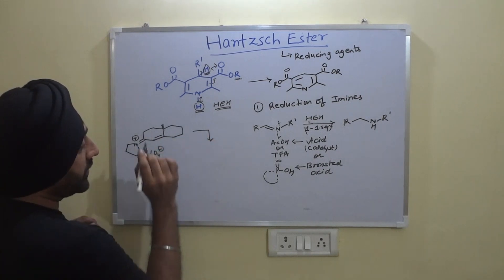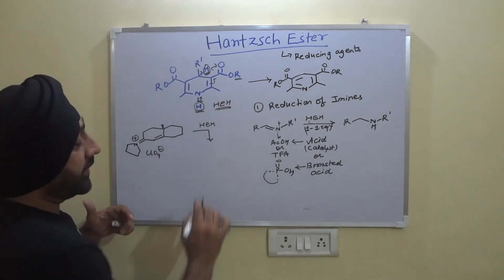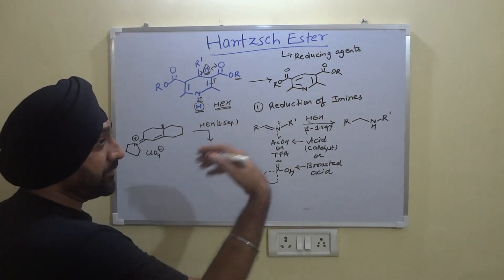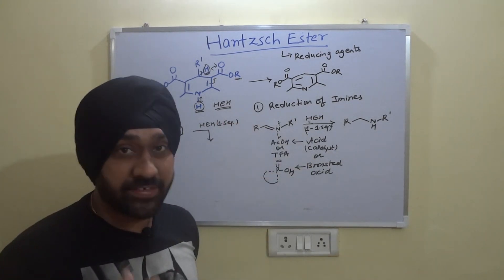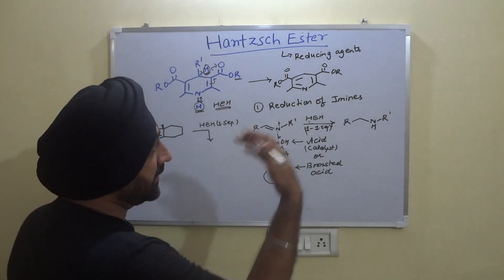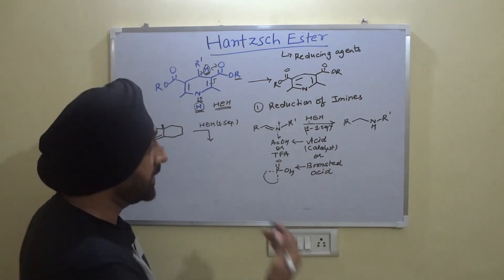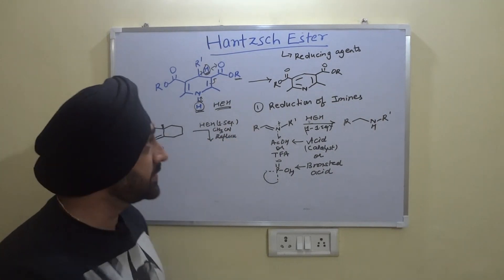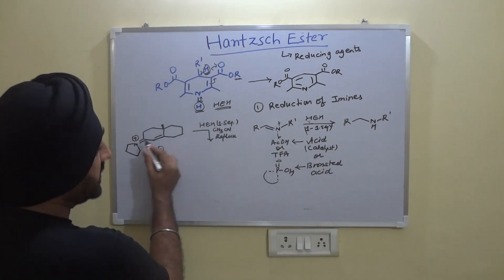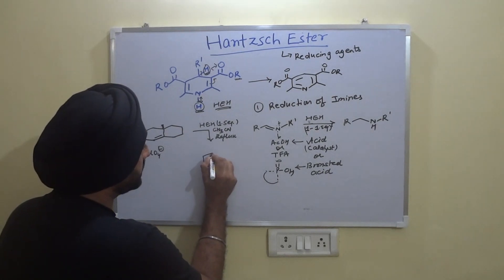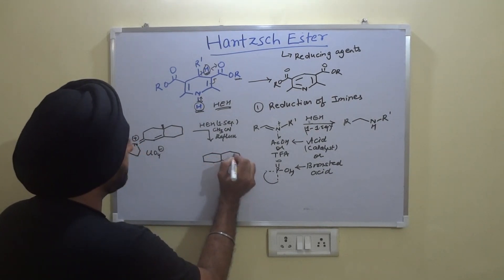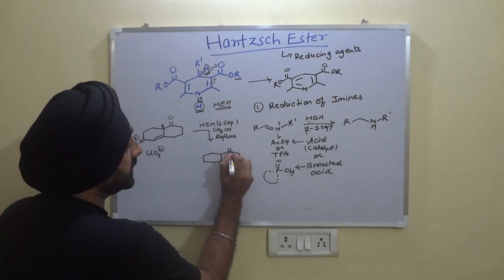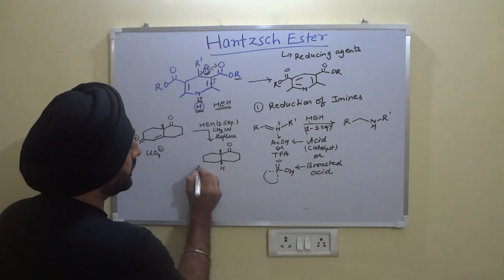Suppose we have a molecule with a double bond in conjugation with an imine, and we reduce it with Hantzsch ester using 1 to 1.5 equivalents. Solvents used in this reaction include acetonitrile, THF, toluene, or dichloromethane — here we use acetonitrile and reflux. What happens is this double bond in conjugation with the imine gets reduced, and only a single isomer is obtained.